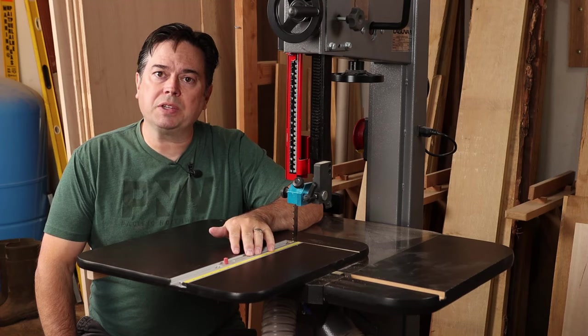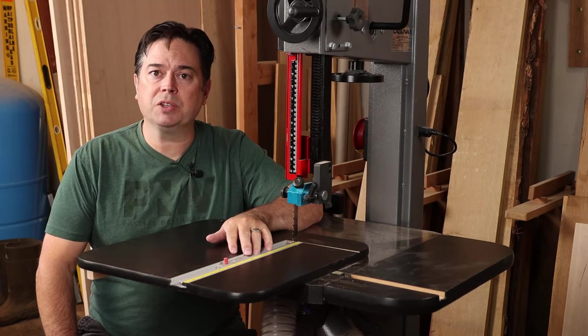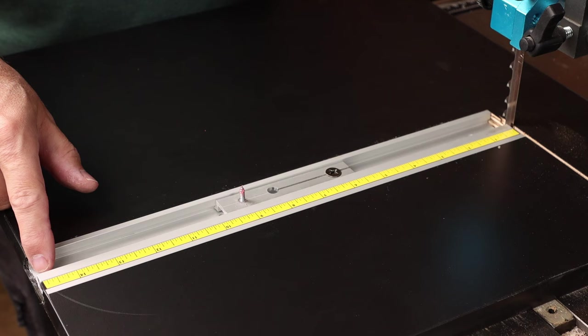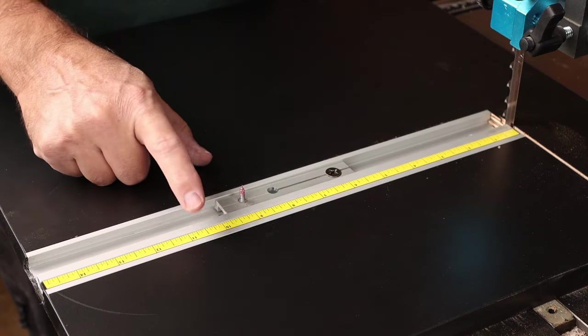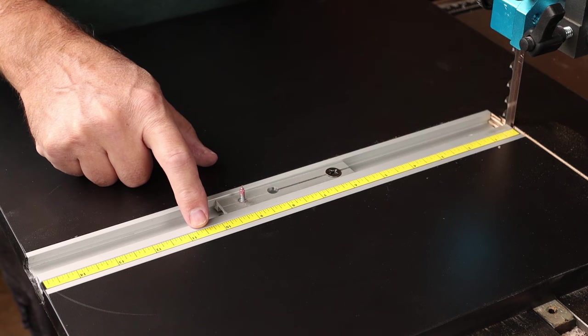And then the only feature you need to add on the top of the jig is just this combination track. This allows you a space for the miter slider as well as a recess for a tape measure so you can accurately set the radius of your circle.